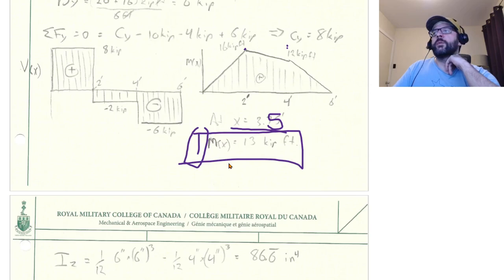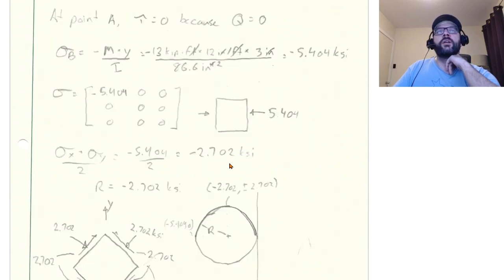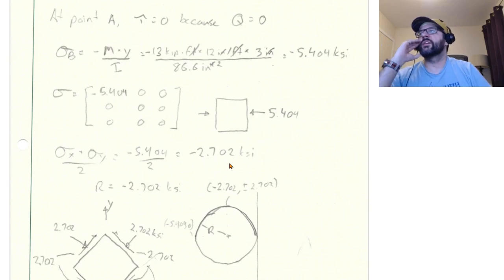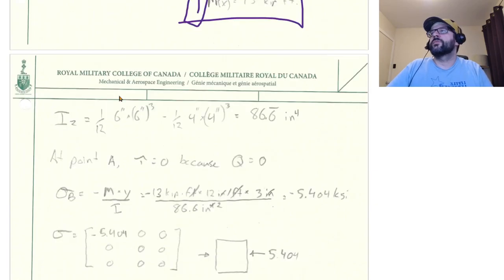Okay. So we're also going to be worried about the I. So our IZ, again, it's a box beam, so it's fairly easy to calculate. It's just going to be the I for the outer minus the I for the inner box. So one over 12 times six inches times six inches cubed minus one over 12 times four inches times four inches cubed. And that's going to give you 86.67 inches to the fourth.